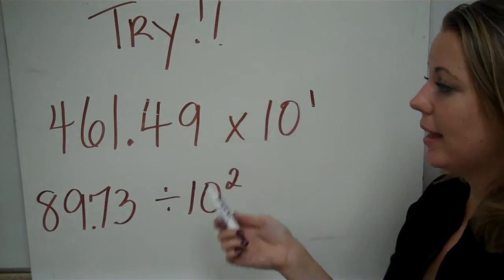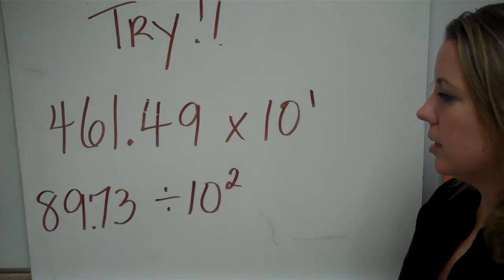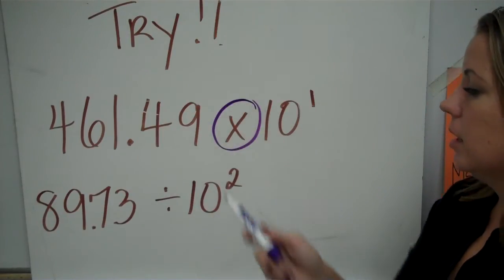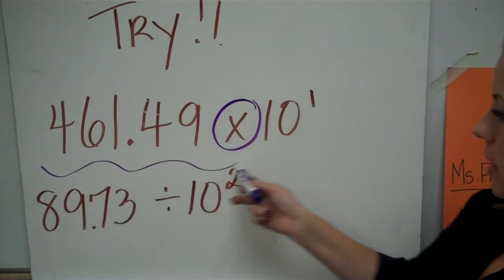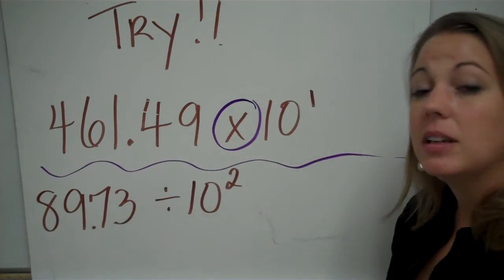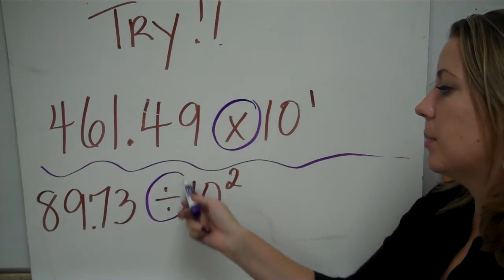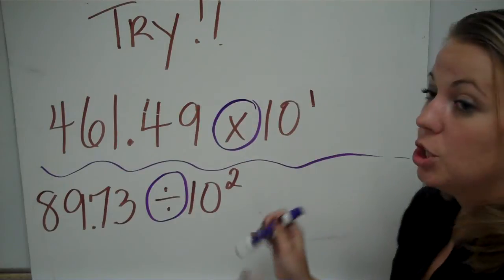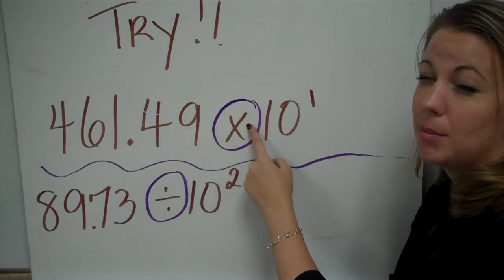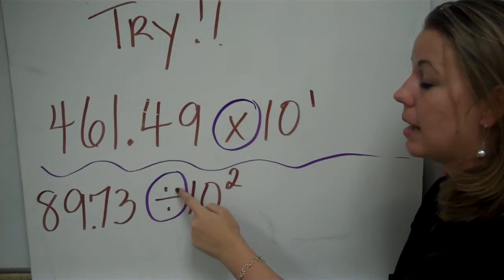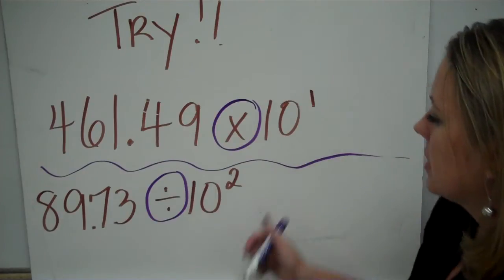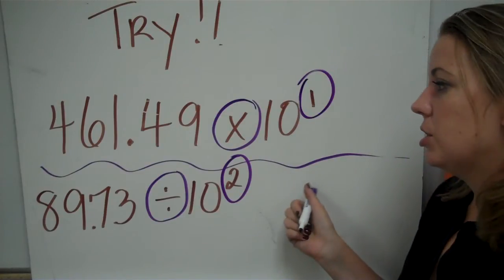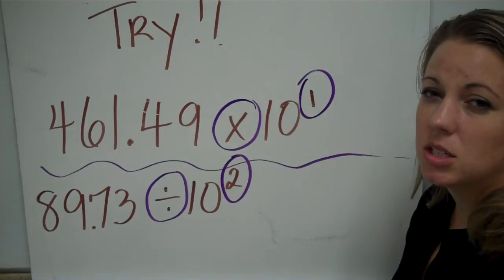Now I want you to try two problems. First: four hundred sixty-one and forty-nine hundredths times ten to the first power — you're multiplying here. Second: eighty-nine and seventy-three hundredths divided by ten to the second power — your number should be getting smaller. Think about which direction you're moving your decimal, and then read your exponent to know how many times. Press pause, try these two, then come back.